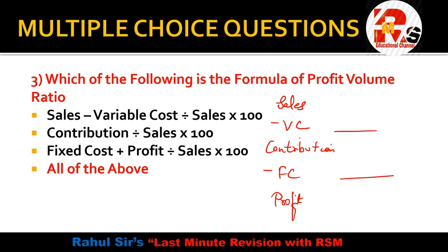So, sales minus variable cost gives contribution, and contribution minus fixed cost gives profit. PVR = contribution divided by sales into 100. When you have two years of data, PVR = change in profit divided by change in sales into 100. Also, fixed cost plus profit gives contribution. All these are valid formulas — that's why the answer is all of the above.